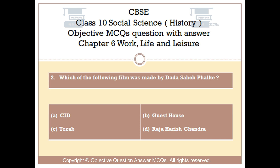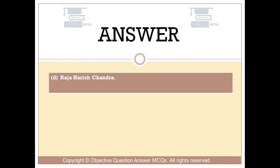Question number 2: Which of the following films was made by Dada Saheb Falk? Option A: C. Id. Option B: Guest House. Option C: Tezab. Option D: Raja Harish Chandra. The right answer is Option D: Raja Harish Chandra.